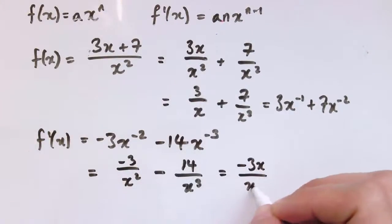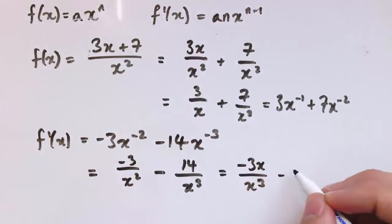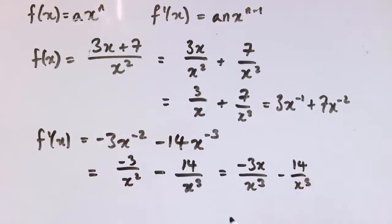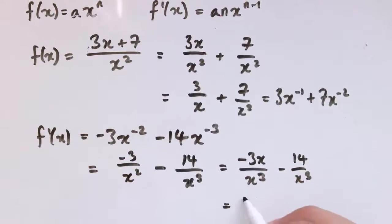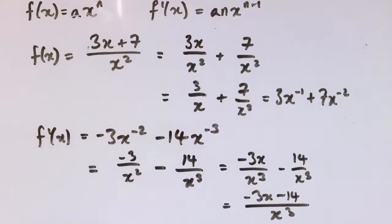And I suppose if you want to be really fancy, you could put it back in the form of the questions we started off and say, oh, this is minus 3x over x cubed minus 14 over x cubed. So we've ended up here with minus 3x minus 14 all over x cubed. So, as you can see, it's not just the derivative of this divided by the derivative of this. It's something much more complicated going on, but that is the answer.